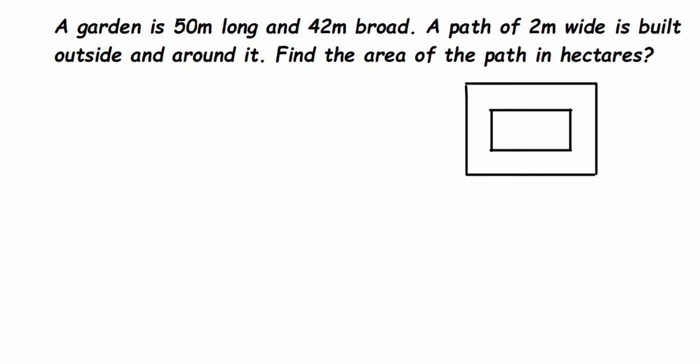Here's a question on perimeter and area. A garden is 50 meters long and 42 meters broad. A path of 2 meters wide is built outside and around it. Find the area of the path in hectares. To explain this, I have taken a figure — length is 50 meters and breadth is 42 meters.